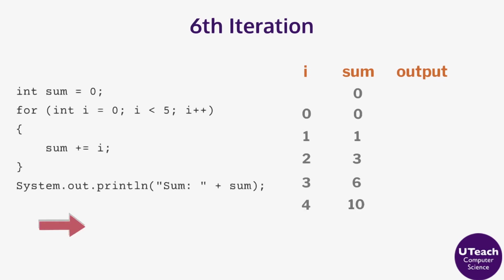For the sixth iteration, the value of i is 5 and the conditional in the for loop is false, so the loop ends. Now the print statement after the loop is executed and the output is sum: 10.